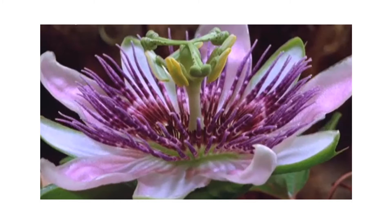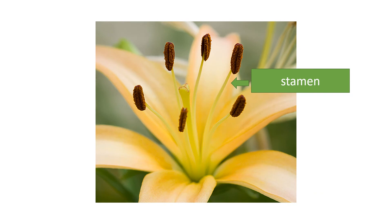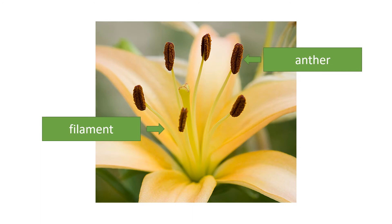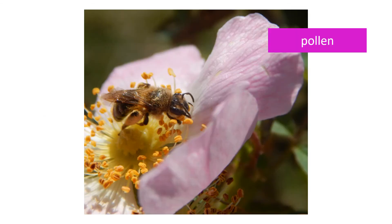Now the petals have opened up, we can see both the male and female parts inside. The male part of the flower is called the stamen, and it consists of the anther which is held up by the filament. It's actually the anther that produces the pollen.